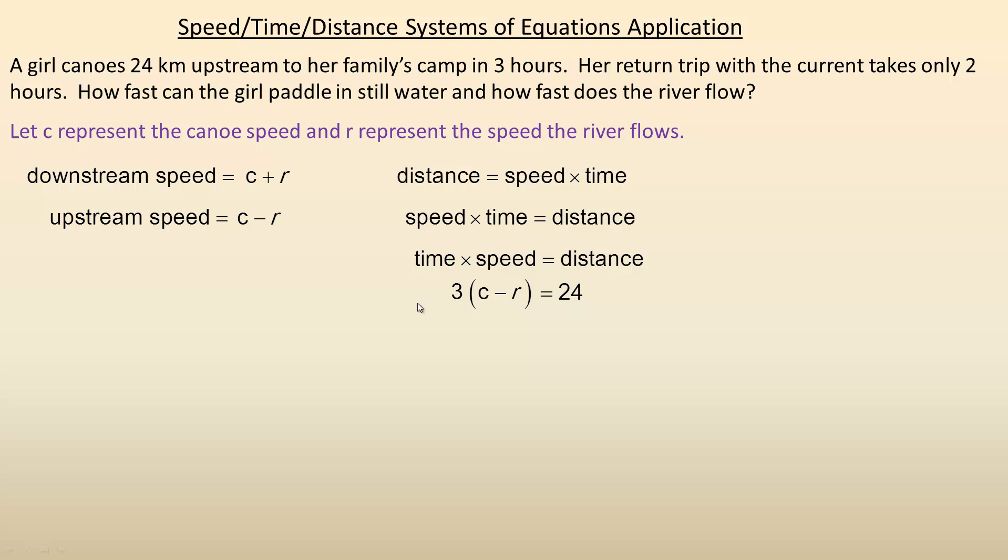Now let's do the return trip. It only took 2 hours, so 2 will be the time. The speed in this case, because she is going downstream, is C + R, and it equals 24 because it is still the same 24 kilometers.